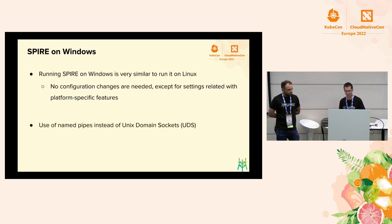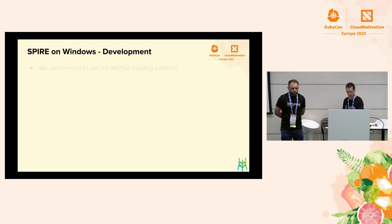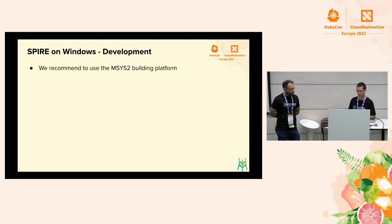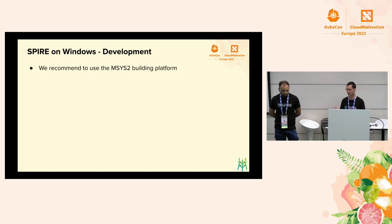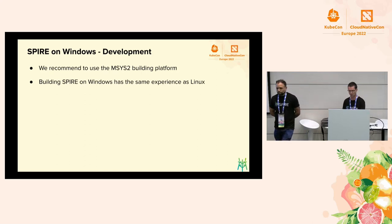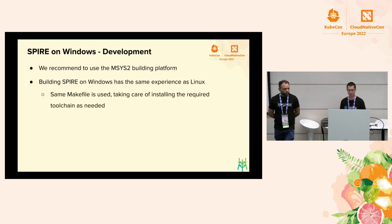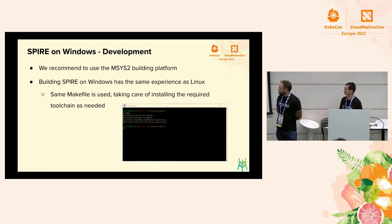One of the guiding principles in SPIRE is to make it as easy to operate and configure as possible. With that in mind, we didn't introduce many changes in the way you run SPIRE on Windows. Only minimal, platform-specific configuration changes are needed. For example, instead of using Unix domain sockets, you will be using named pipes on Windows. Building SPIRE on Windows has pretty much the same experience as Linux — the same makefile is used, so familiar makefile targets work the same way.